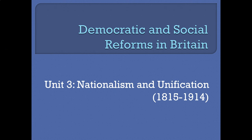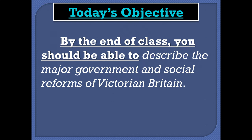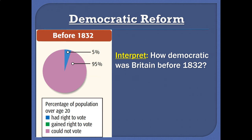Hey everybody, welcome back. We are nearing the end of our nationalism and unification unit. Today we're going to head back to Western Europe, specifically to the country of Britain, and talk about some big social and democratic reforms taking place in the country in the 1800s. Let's see what's going on — we're going to begin by looking at some political and democratic reforms.